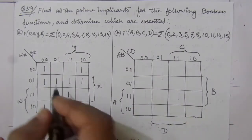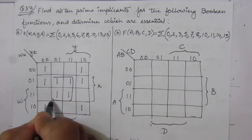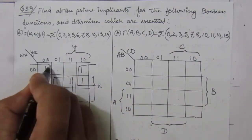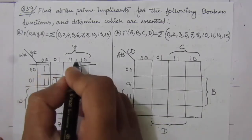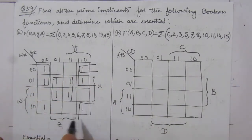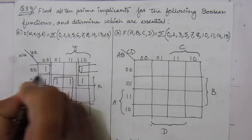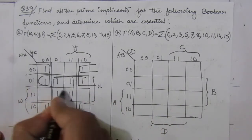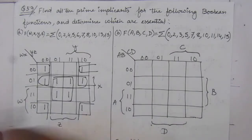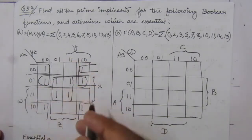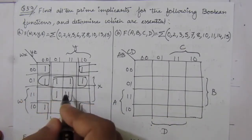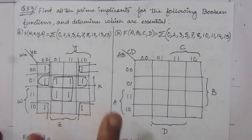Now let us combine. This is one prime implicant, then this one is another prime implicant, and another will be this one. Then we combine all the corner values — these are all prime implicants. We can also combine like this. Because all four corner values form one prime implicant, and then we have others. So we have covered all the one-values.